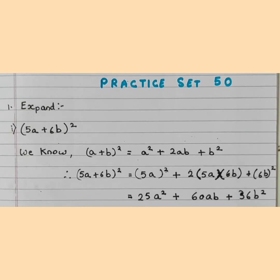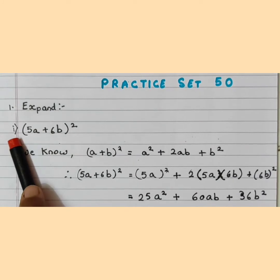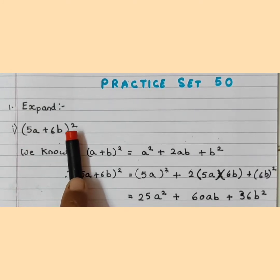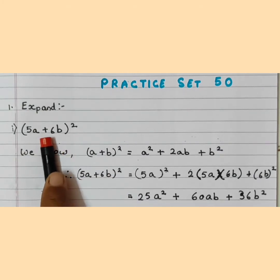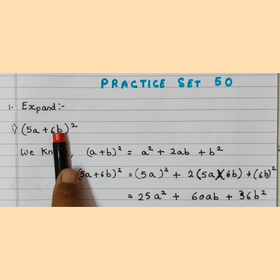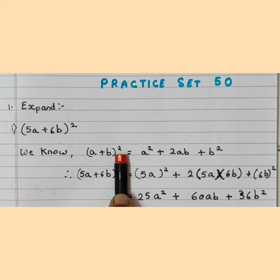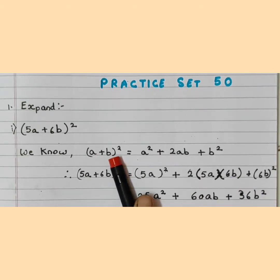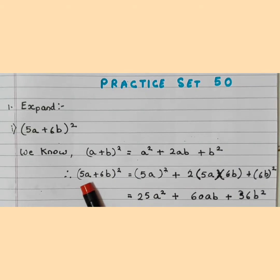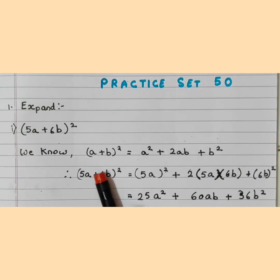Practice Set 50, first sum — expand. The first question is (5A + 6B) whole square. This is a binomial squared and since there is a positive sign, we use the formula A plus B the whole square. We know A plus B the whole square is equal to A square plus 2AB plus B square. We will consider 5A as A and 6B as B, substituting them in place of A and B.